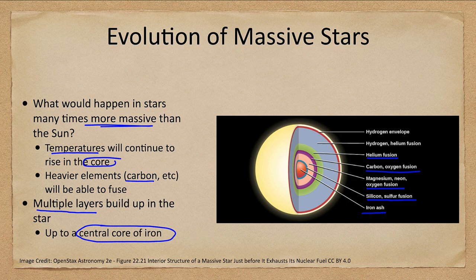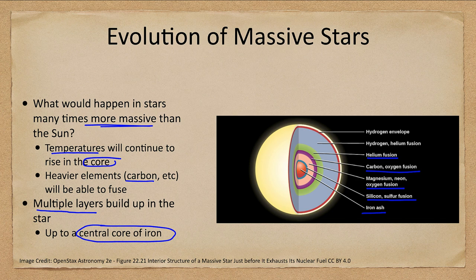So fusing hydrogen into helium gets you energy, helium into carbon, all the way up to iron and that is the limit of where you can get energy from nuclear fusion.